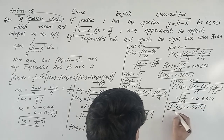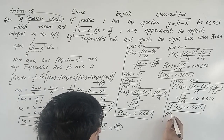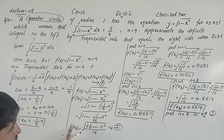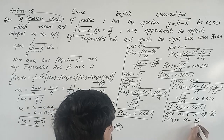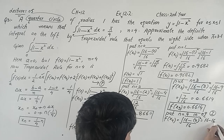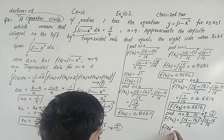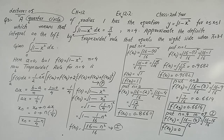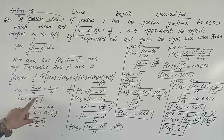For n = 4: f(x₄) = √((16 − 16)/16) = √(0/16) = 0. So the function values are: f(x₀) = 1, f(x₁) = 0.9682, f(x₂) = 0.8660, f(x₃) = 0.6614, f(x₄) = 0.